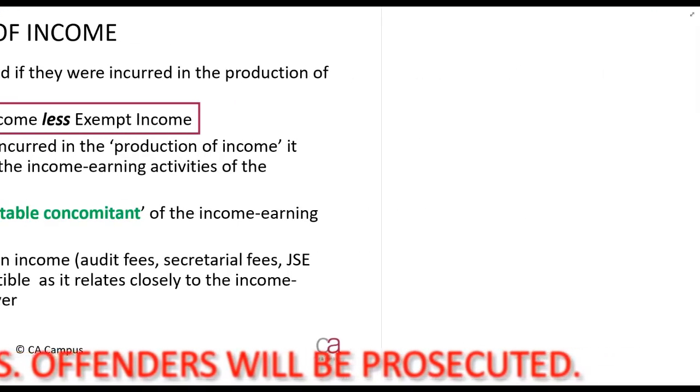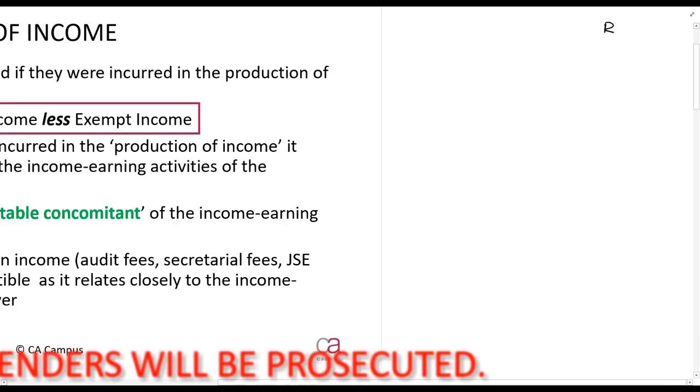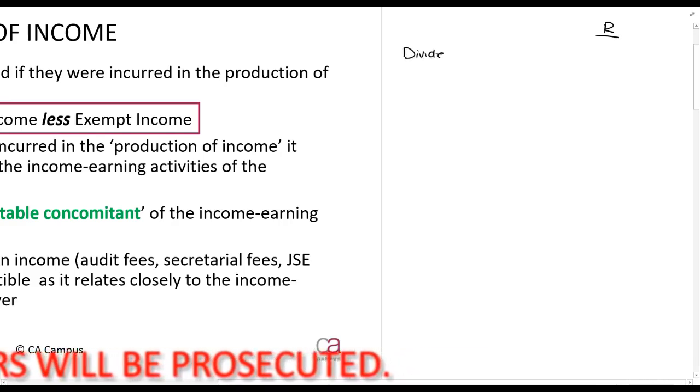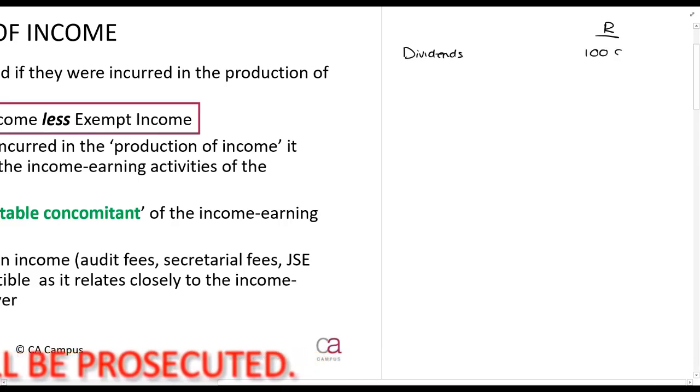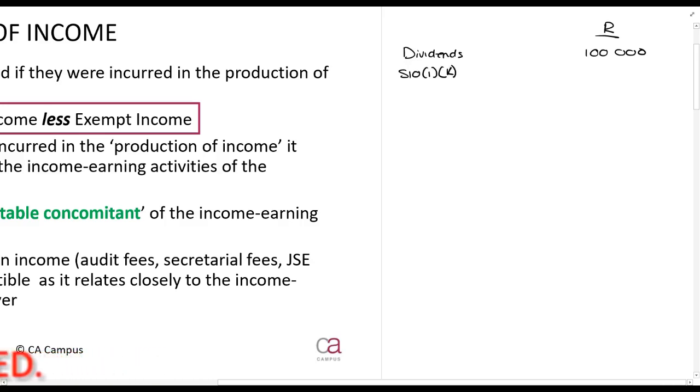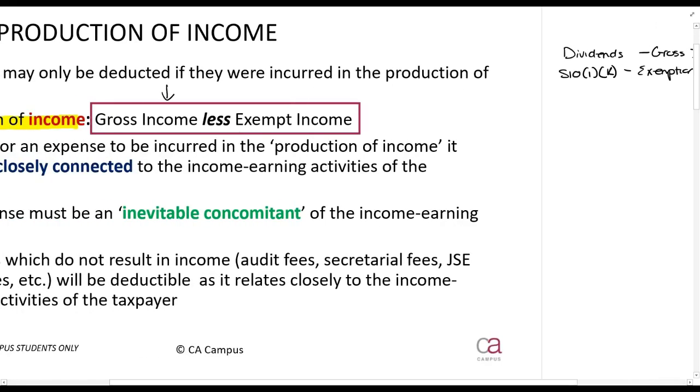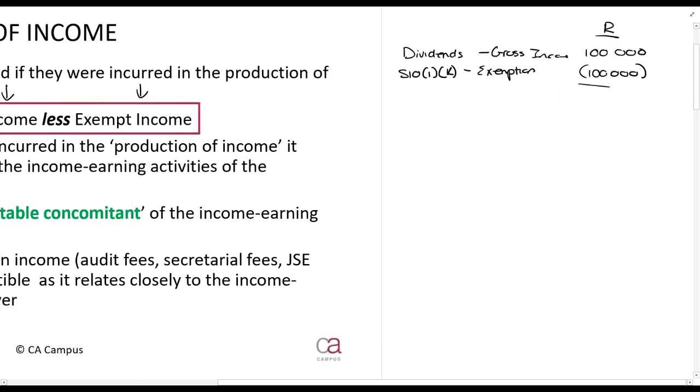The definition of income in section 1 says gross income less exempt income. So if you earn dividends, we know it is gross income. It must be included in gross income. But what do we also know about dividends, local dividends? Section 10-1 says it is exempt. Dividends is our gross income section. So if we apply this formula, gross income less exempt income, what is our income amount that comes from the dividends? Zero.